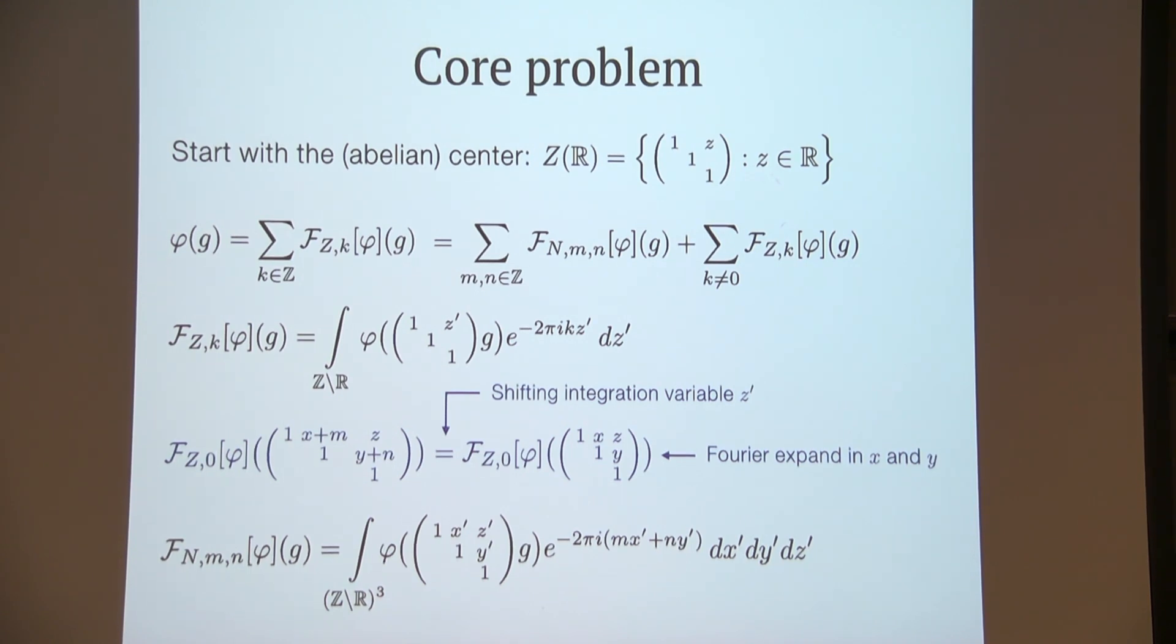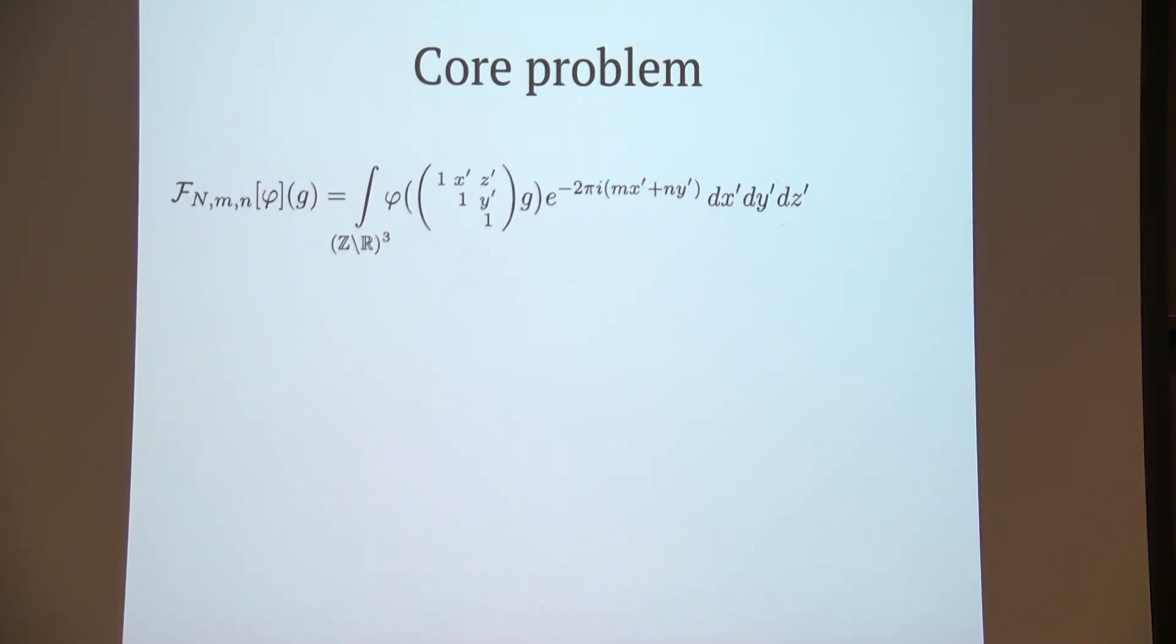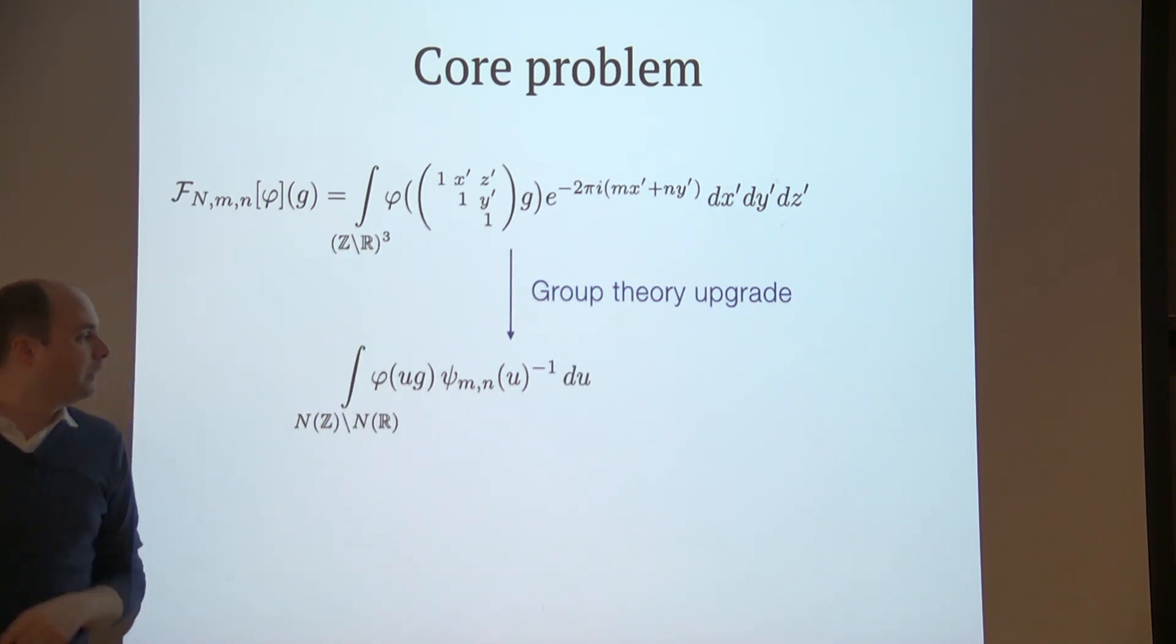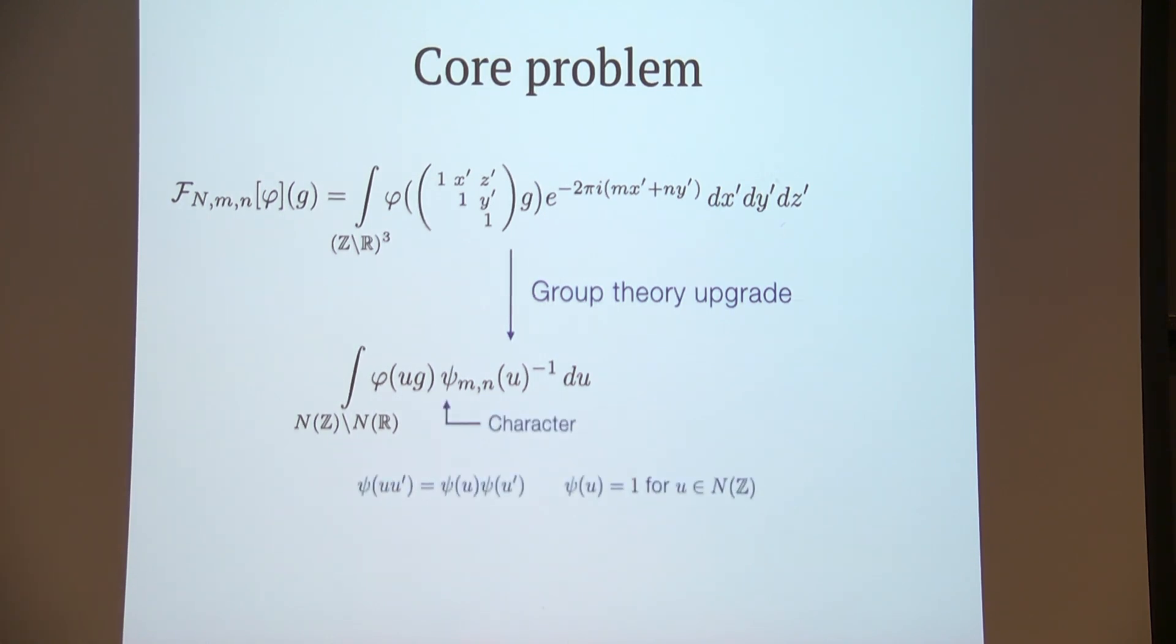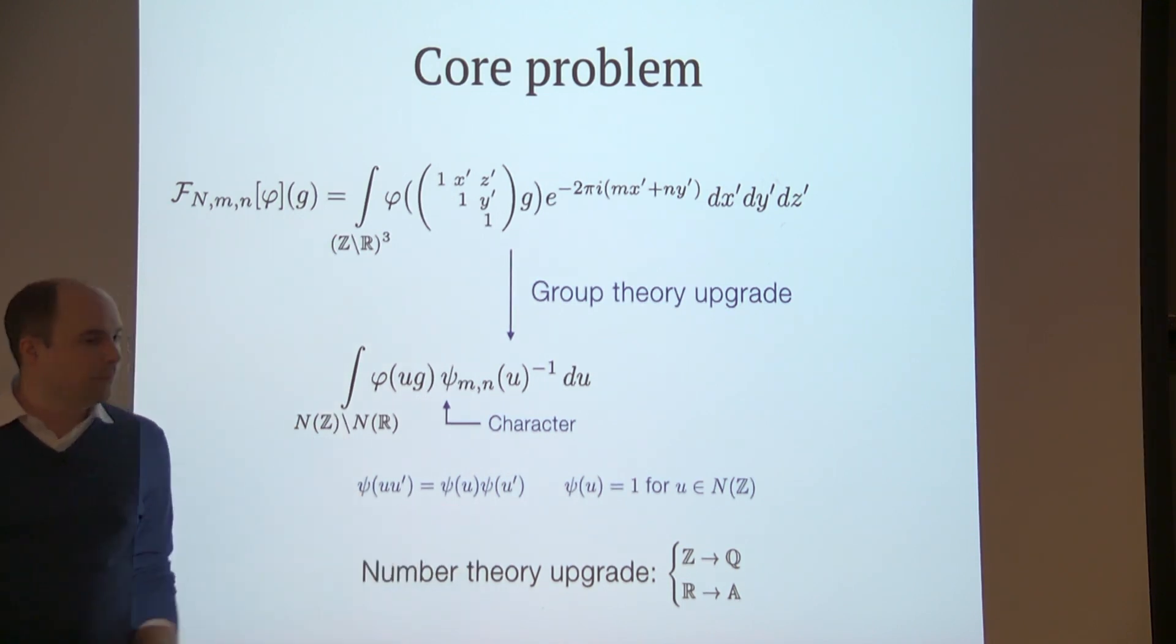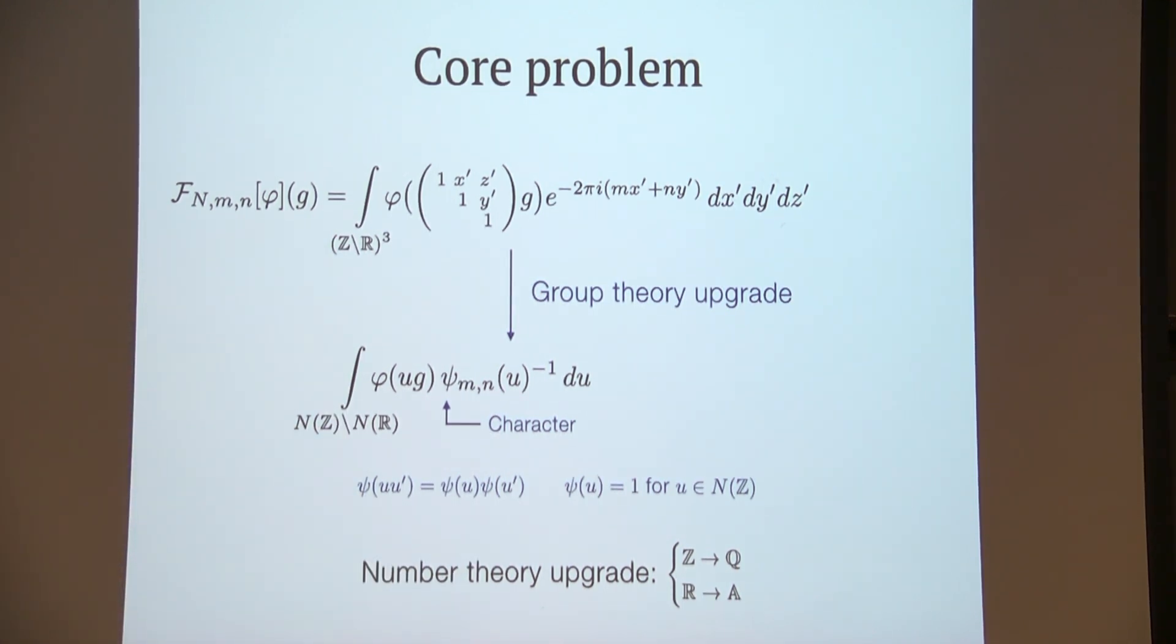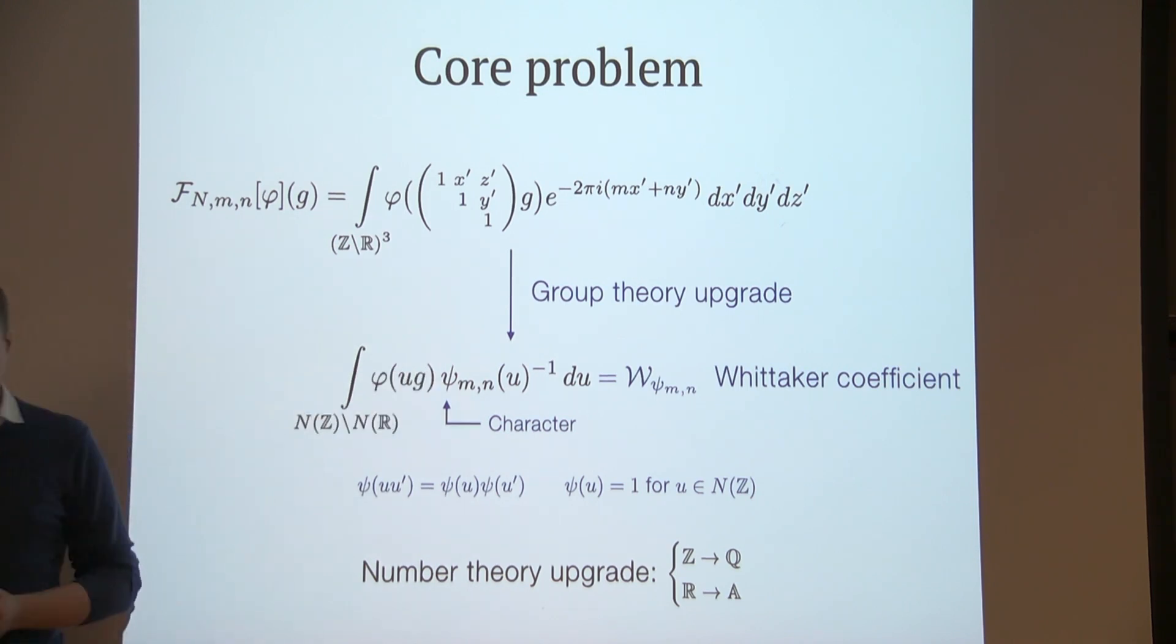Let us take a closer look at this Fourier coefficient. We can upgrade it to be more group theoretical, so we replace the integration domain by this quotient Γ\N and replace the modes by this so-called character here. We can also make a number theory upgrade by replacing Z with Q and R with the adeles.